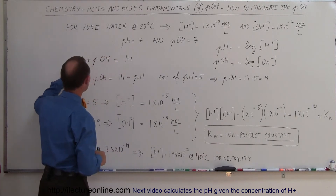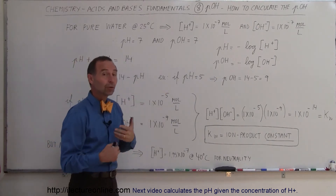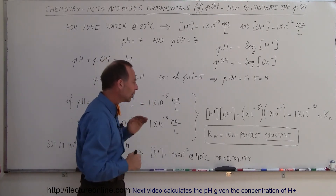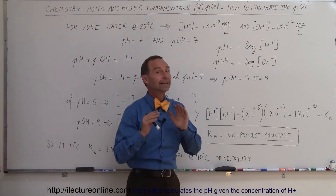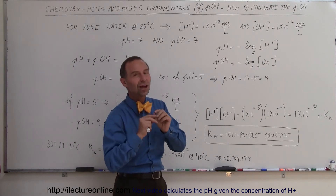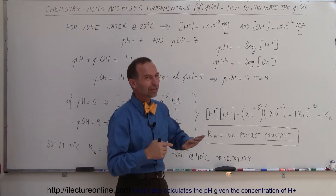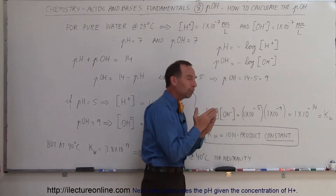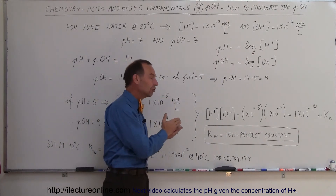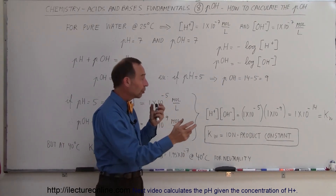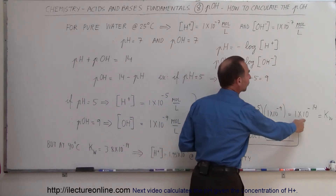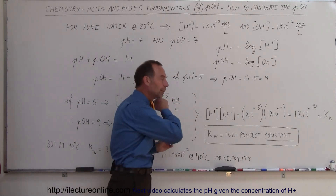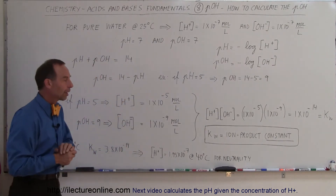There's that 14 again — this time as the exponent, because we're talking about concentrations. We always get that 1×10⁻¹⁴. We call this the ion product constant. It's a constant because it doesn't change at a given temperature. If we multiply the concentration of the hydrogen ion and the concentration of the hydroxide ion together, we will always get 1×10⁻¹⁴, regardless of the ratios of the concentrations. That's why we call it the ion product constant.